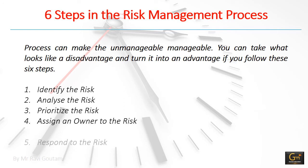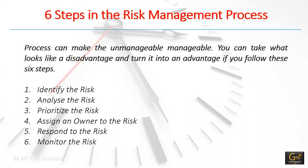So how do you handle something as seemingly elusive as project risk management? The same way you do anything when managing a project — you make a risk management plan. Process can make the unmanageable manageable. If you follow these six steps, you can turn a disadvantage into an advantage: identify the risk, analyze the risk, prioritize the risk, assign an owner to the risk, respond to the risk, and monitor the risk.